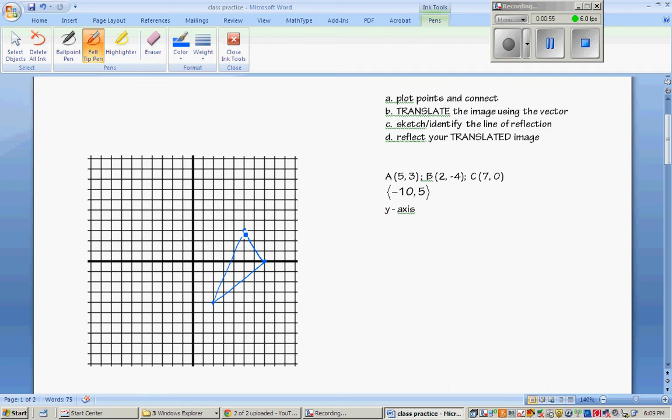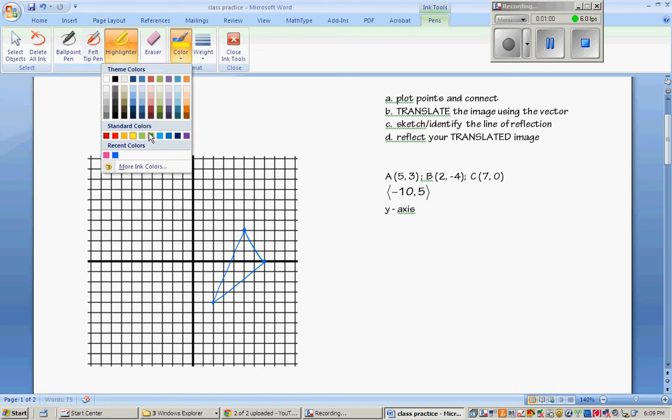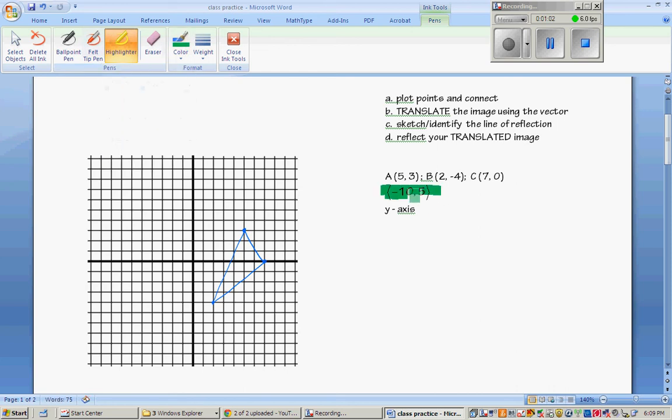Next, we are going to translate. So we are going to use this vector. You must translate first. So we're going to shift this. As you know, all the points are going to get shifted 10 to the left, or back 10, and then up 5. Here's the x portion, here's the y portion of your vector.